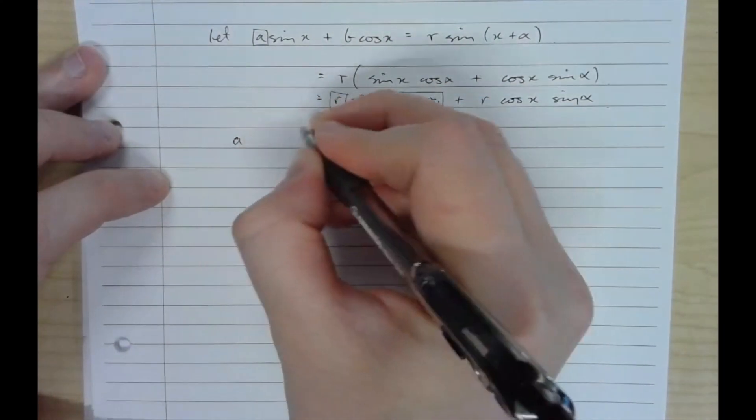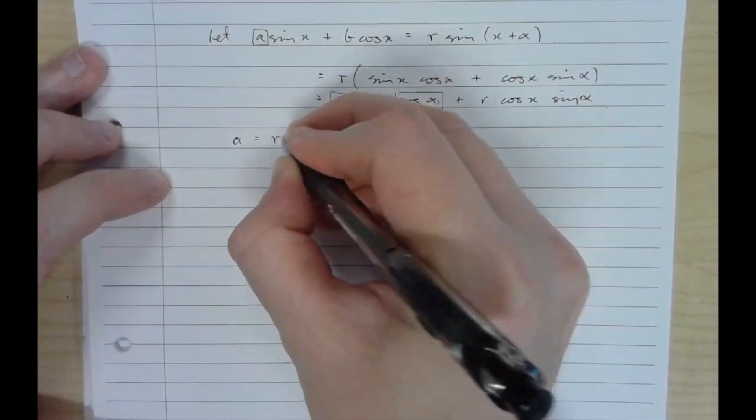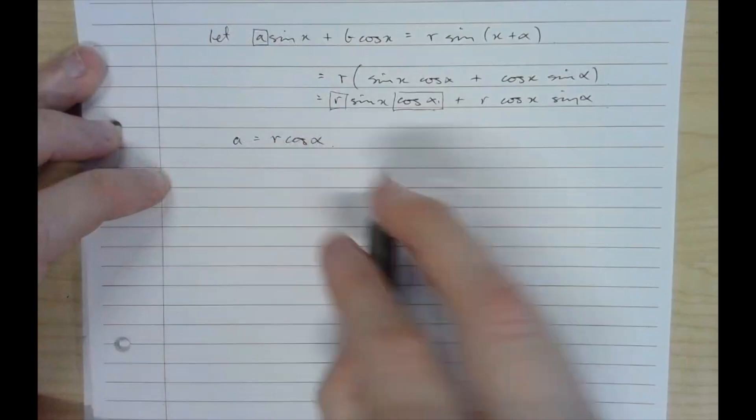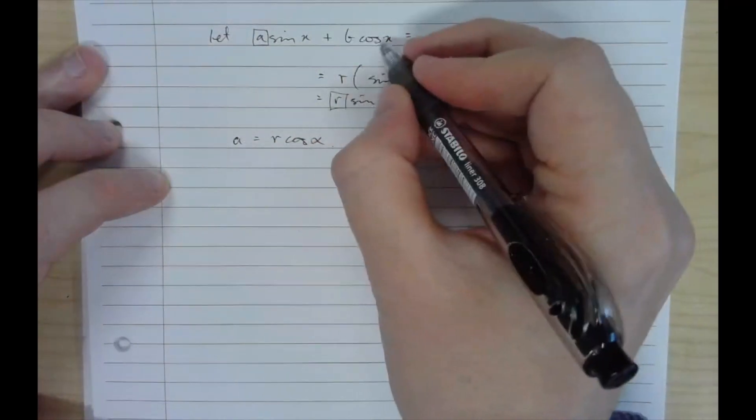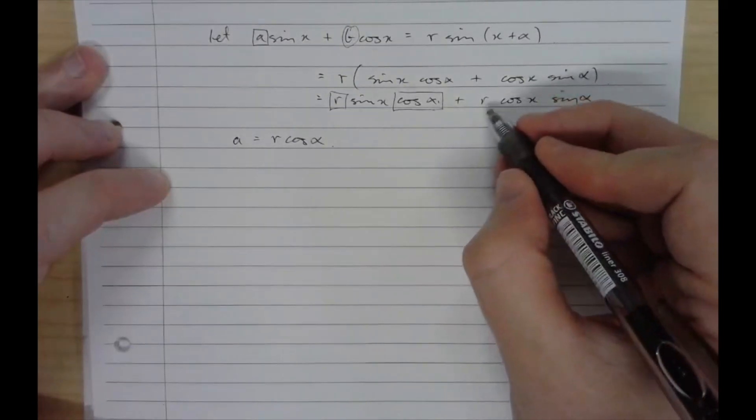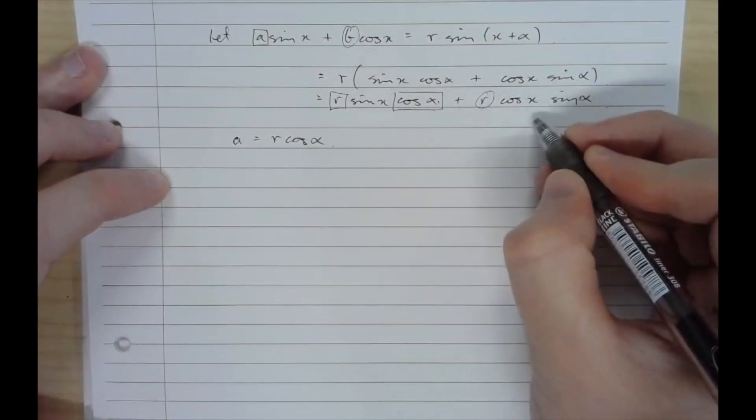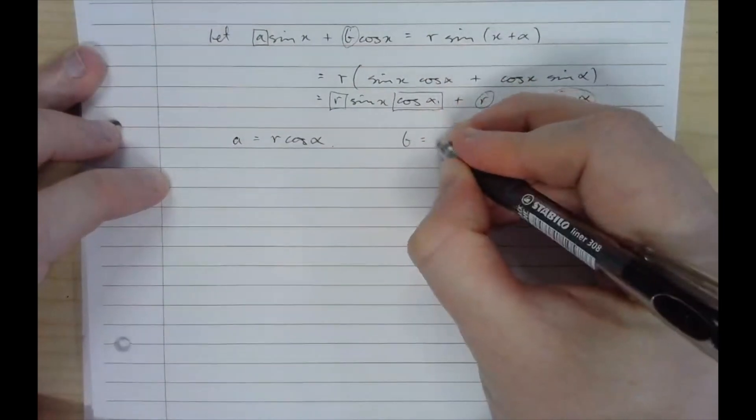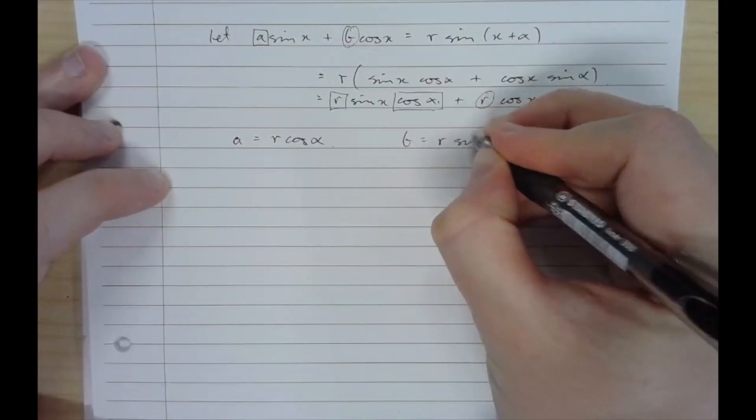So A will be equal to R cos alpha if they're equivalent. On the left hand side the coefficient of cos x is B and on the right hand side the coefficient of cos x is R sine alpha. So B equals R sine alpha.